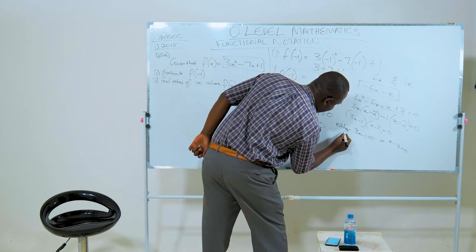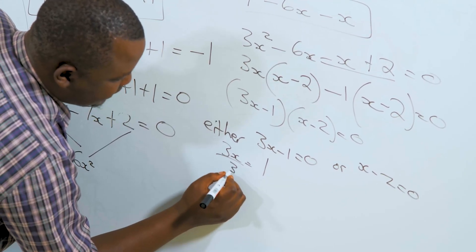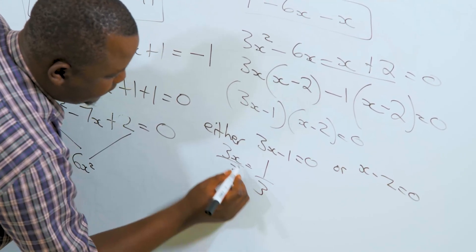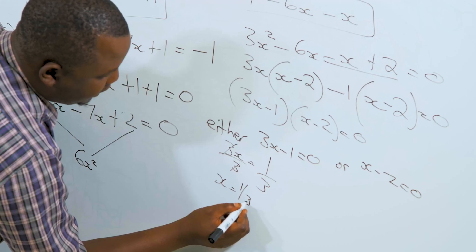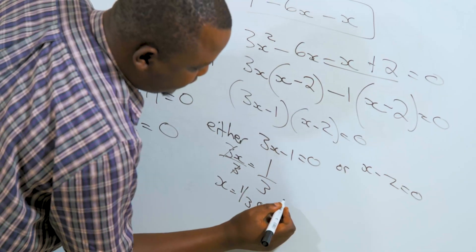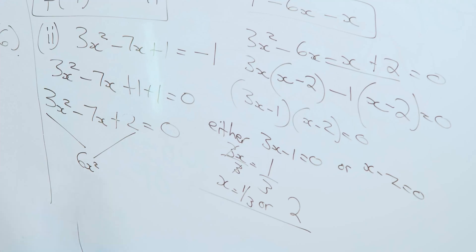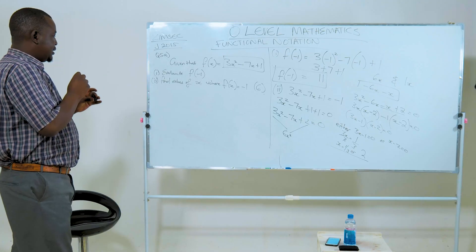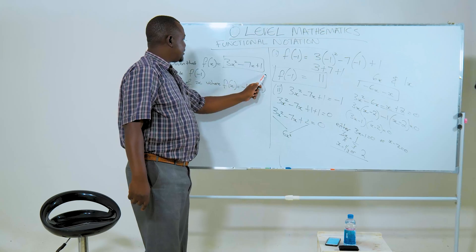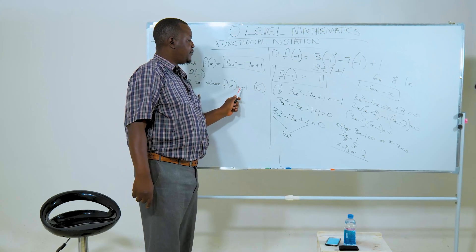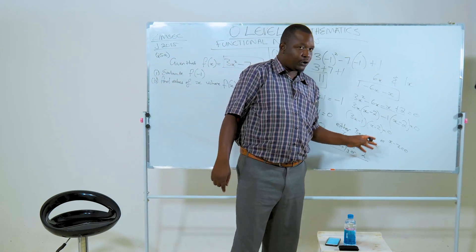From 3x minus 1 equals zero, we get 3x equals 1, and dividing both sides by 3 gives x equals one third. From x minus 2 equals zero, we get x equals 2. So the two values of x for which f(x) equals negative 1 are x equals one third or x equals 2.